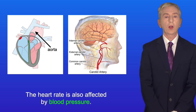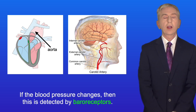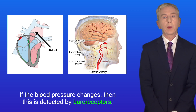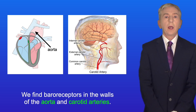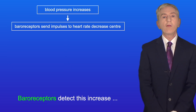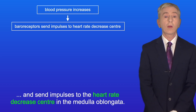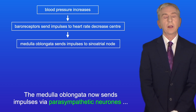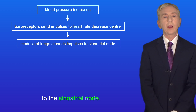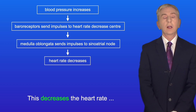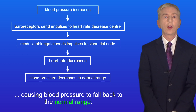The heart rate is also affected by blood pressure. If the blood pressure changes, this is detected by baroreceptors, which are found in the walls of the aorta and carotid arteries. If blood pressure has increased, baroreceptors detect this and send impulses to the heart rate decrease center in the medulla oblongata. The medulla oblongata then sends impulses via parasympathetic neurons to the sinoatrial node, decreasing the heart rate and causing blood pressure to fall back to the normal range.